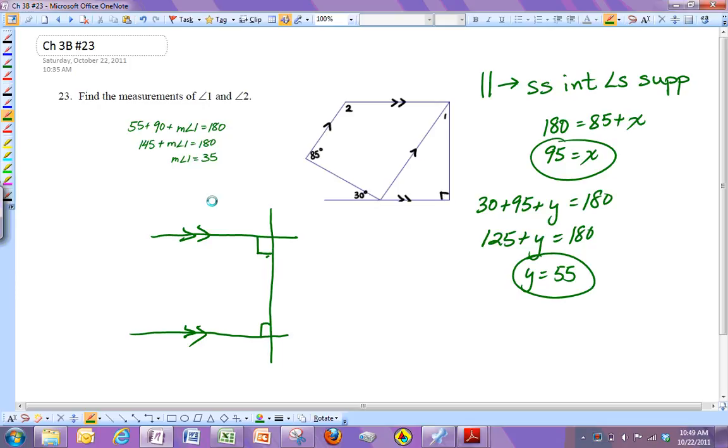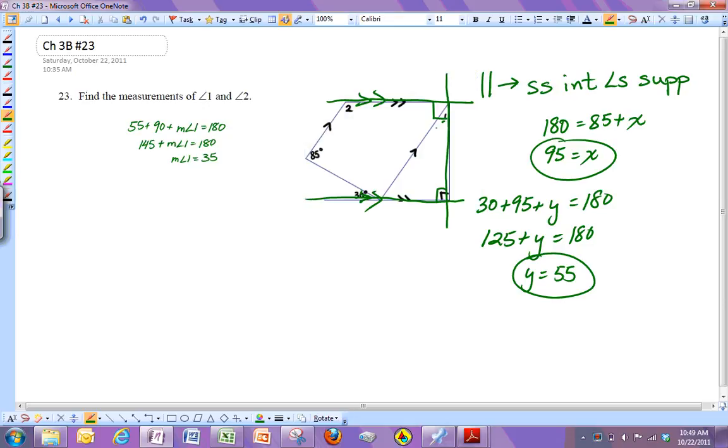Okay. So now if I put this back. Right. We knew angle one was 35 degrees and this total angle is 90. So the leftover part here has to be 55. Okay. Let's erase some of these parts now.